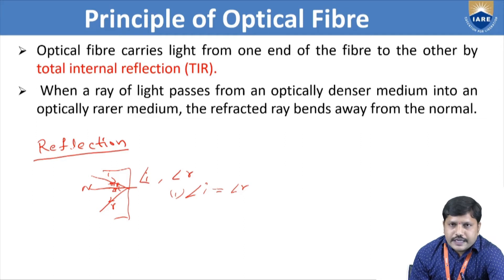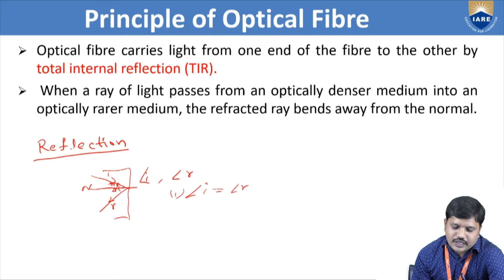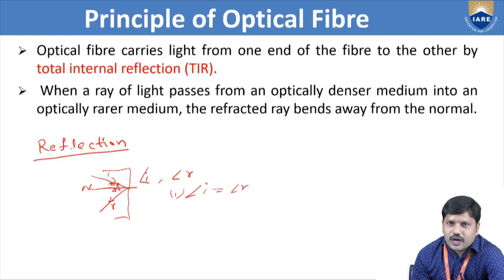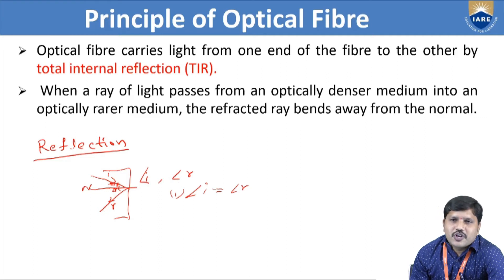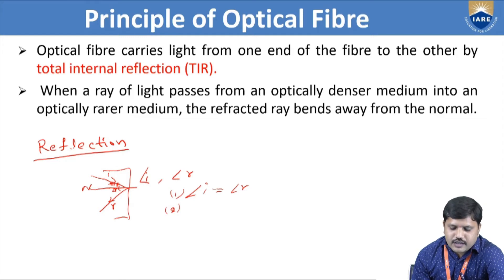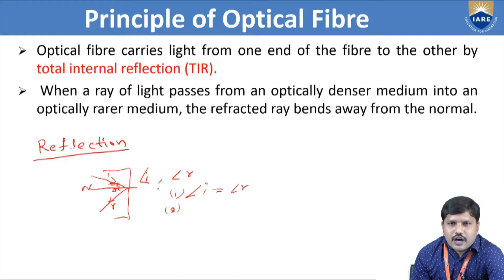The first law of reflection: the angle of incidence always equals the angle of reflection. When the ray is incident on the boundary of a medium or barrier, it bounces back — that bouncing back is nothing but reflection. The incident ray is making some angle with the normal line; the normal line is perpendicular to the incident point on the surface. At the same time, the reflected ray also makes some angle with our normal line, and these two angles are always equal.